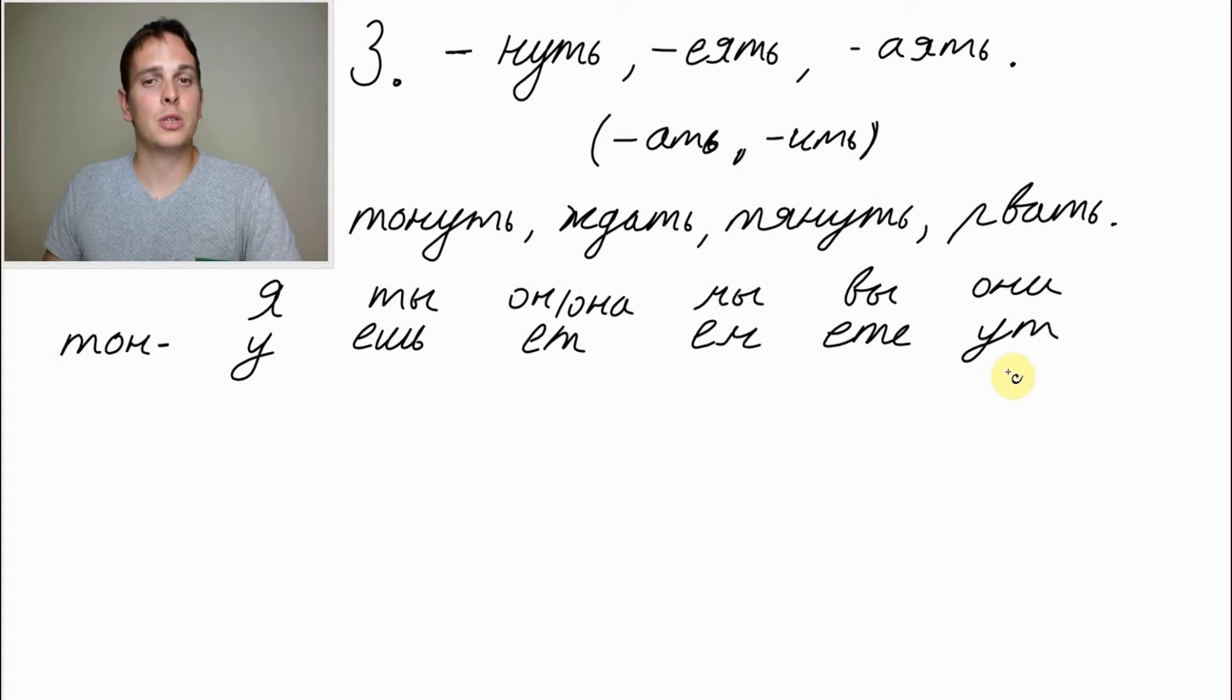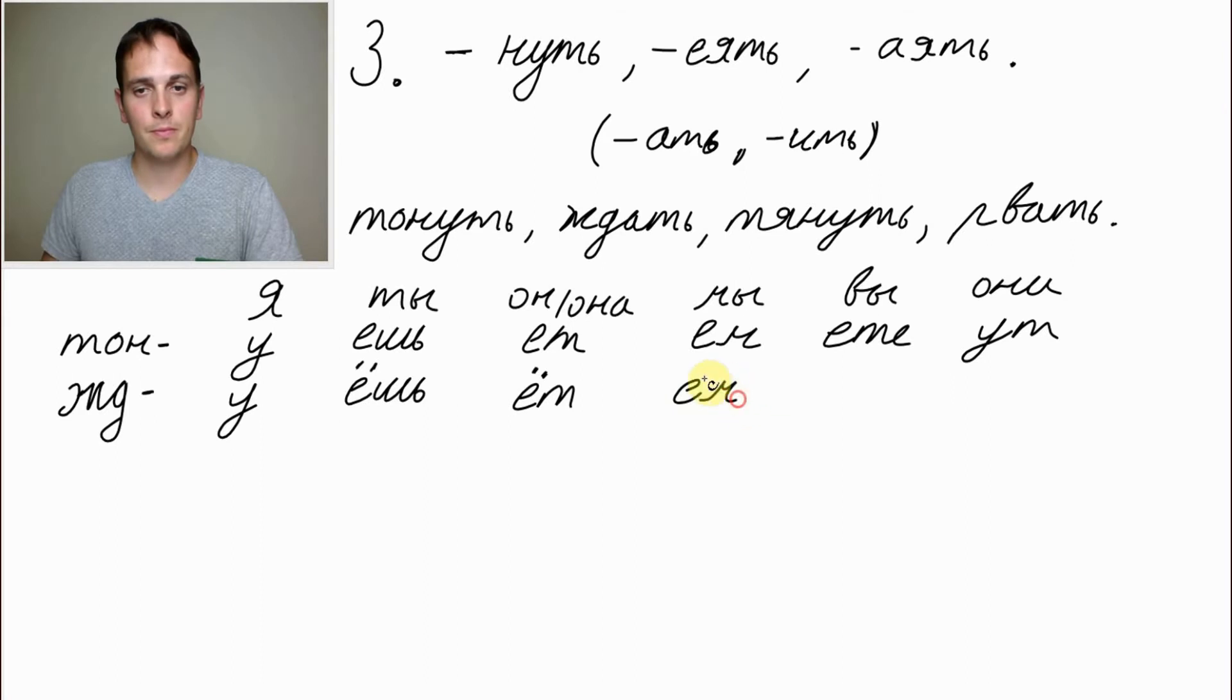How would you say we are sinking? Мы тонем. And you in plural, you're sinking, вы тонете. Now let's take ждать. Again we remove the last two letters, that left жд. Я жду. Ты ждёшь. Он, она ждёт. Мы ждём. Вы ждёте. Они ждут.